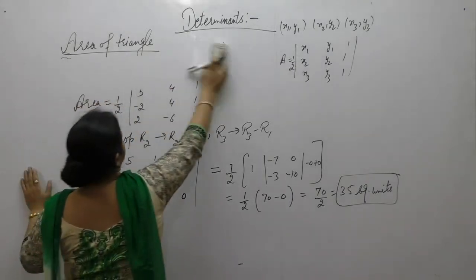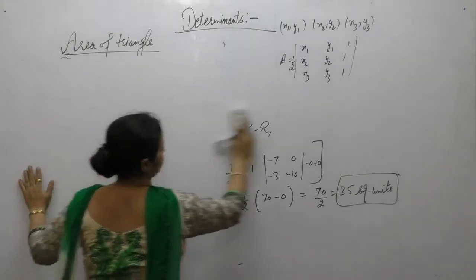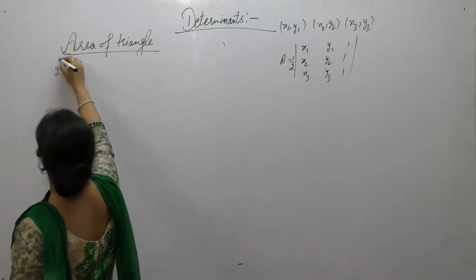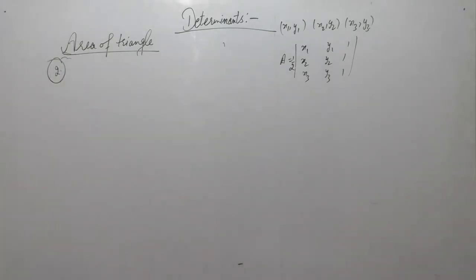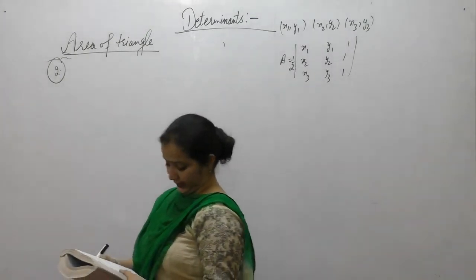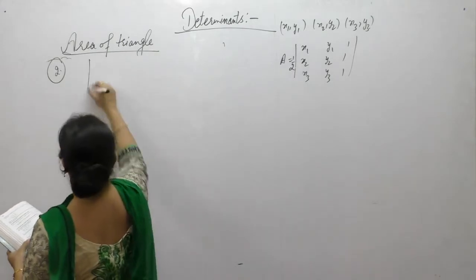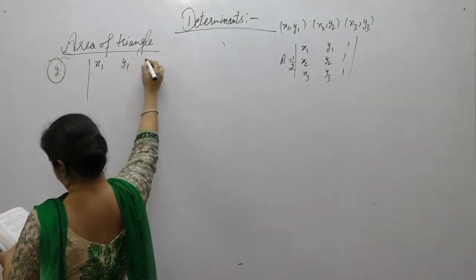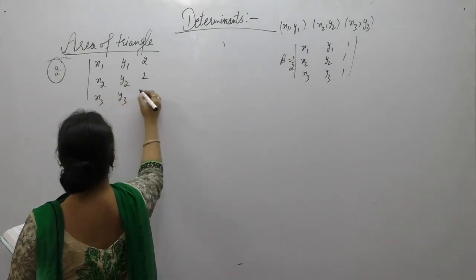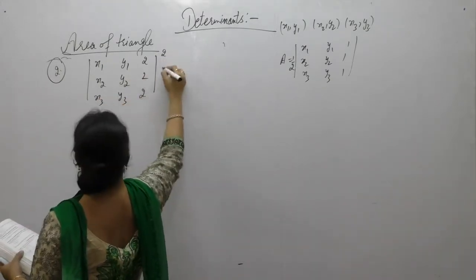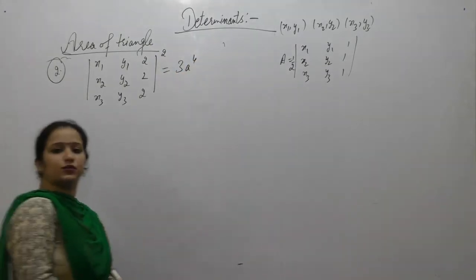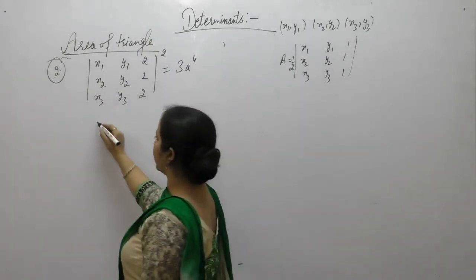Now the next one. If x1,y1, x2,y2, x3,y3 are the vertices of an equilateral triangle whose side is equal to A, then prove that the determinant with rows (x1,y1,1), (x2,y2,1), (x3,y3,1) squared equals 3A⁴/4. Since x1,y1, x2,y2, x3,y3 are the vertices of the triangle, therefore area equals 1/2 times that determinant.